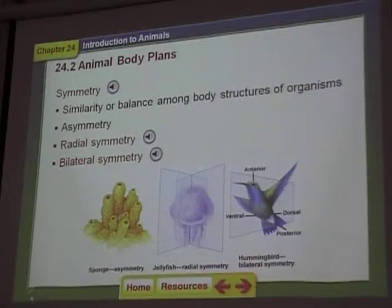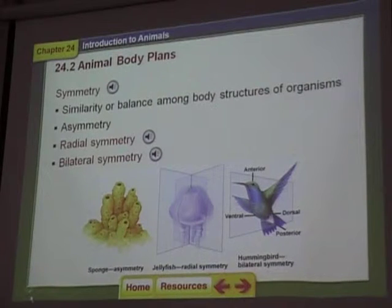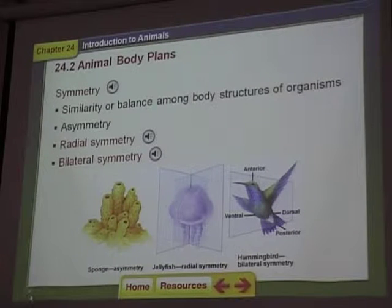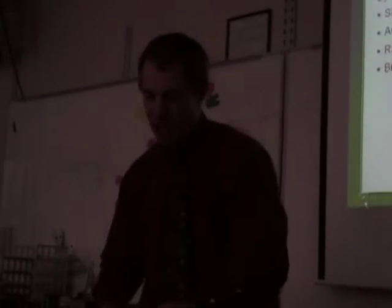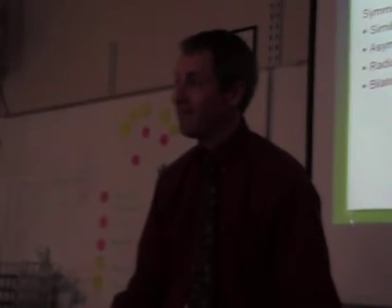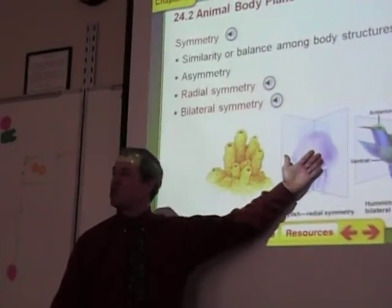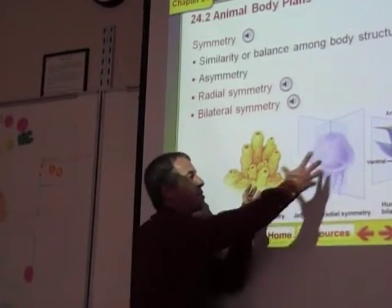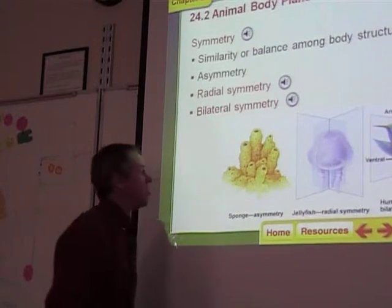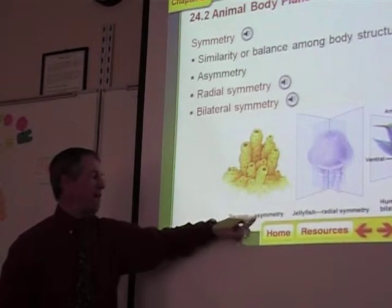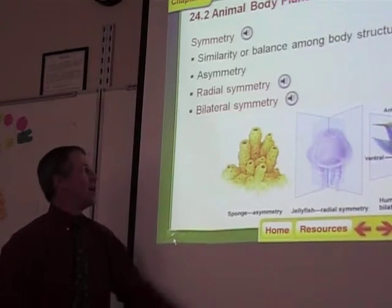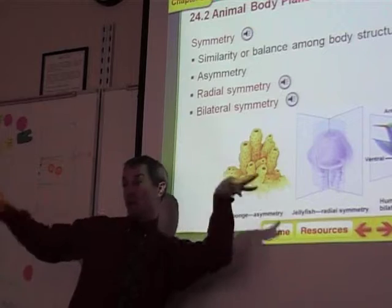Symmetry is the ability to cut something in half and have the two halves be equal. A pizza has symmetry — you slice it down the middle, you get two equal halves. A pizza has what's called radial symmetry, because you can turn it whatever way you want. As long as you go down the middle, you're going to get equal halves. Jellyfish have the same sort of symmetry. Sponges don't have any symmetry at all — we call that asymmetric. A means none, no symmetry.